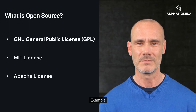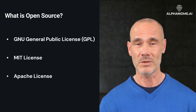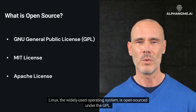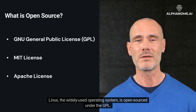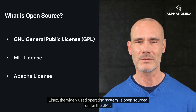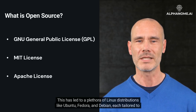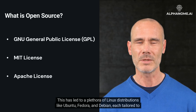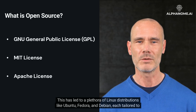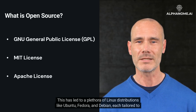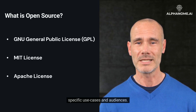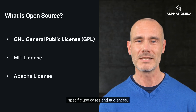Example: Linux, the widely used operating system, is open sourced under the GPL. This has led to a plethora of Linux distributions like Ubuntu, Fedora, and Debian, each tailored to specific use cases and audiences.